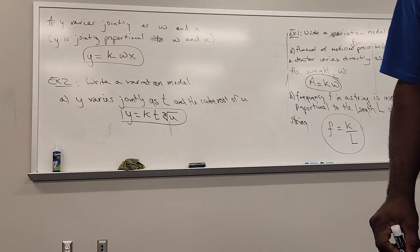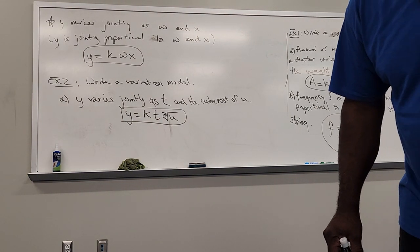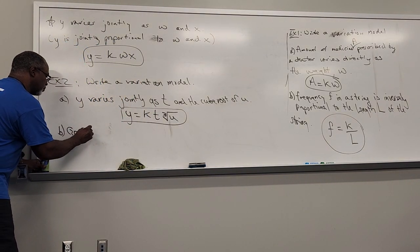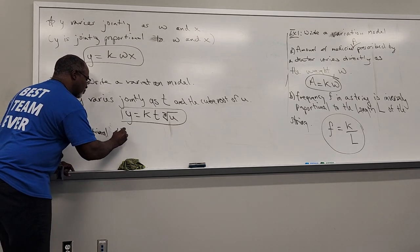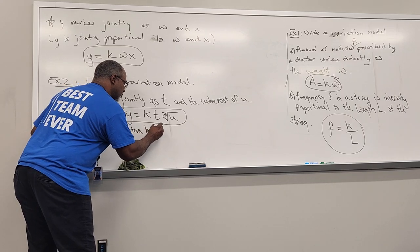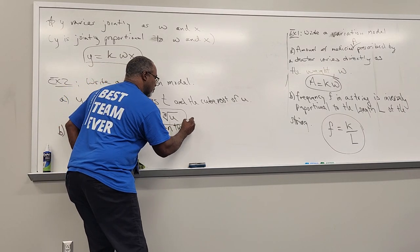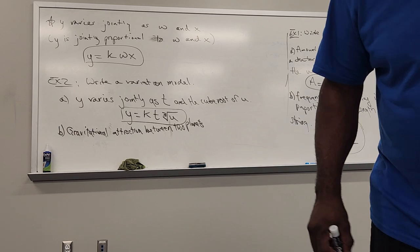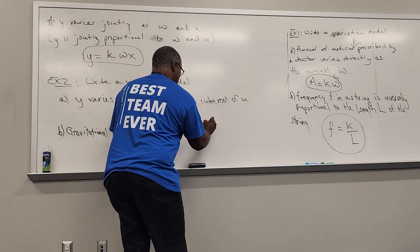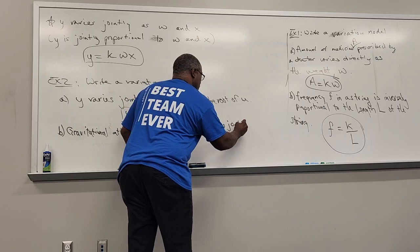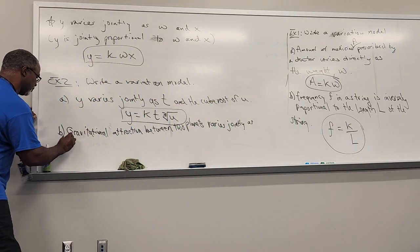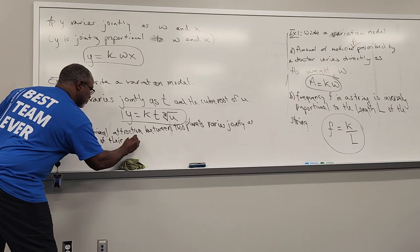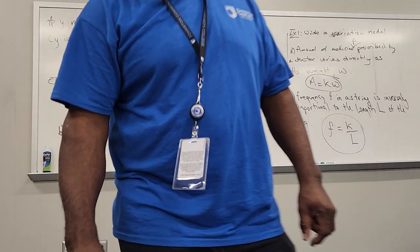Part b: the gravitational force of attraction between two planets varies jointly as the product of their masses — call them m₁ and m₂ — and inversely as the square of the distance between them. We have two things going on here.